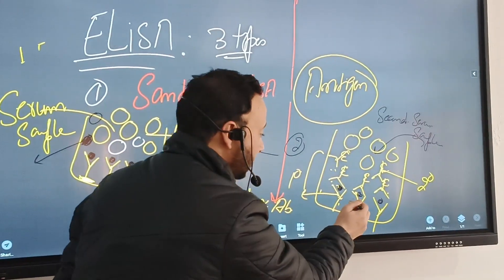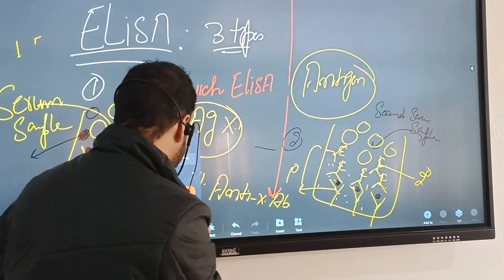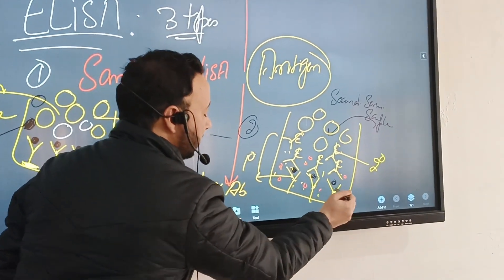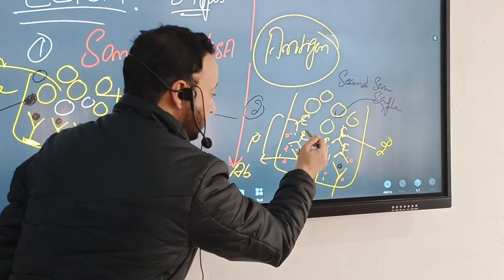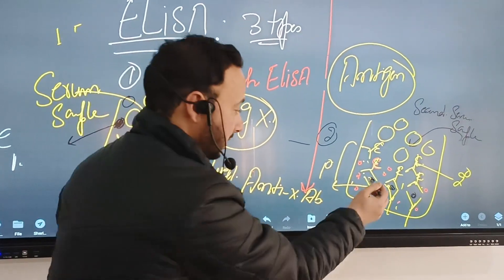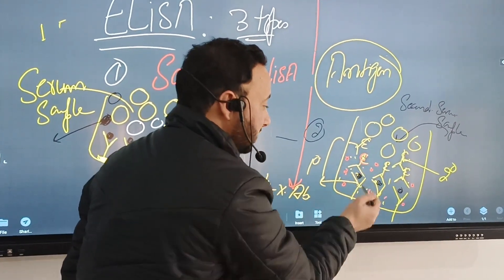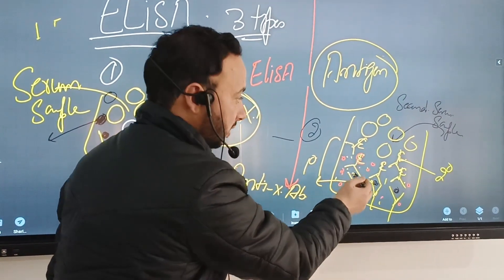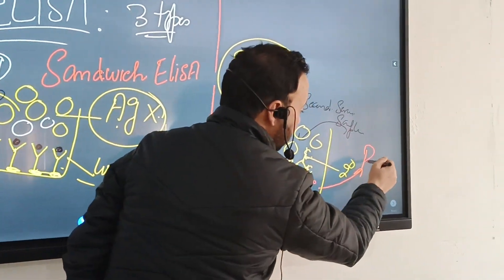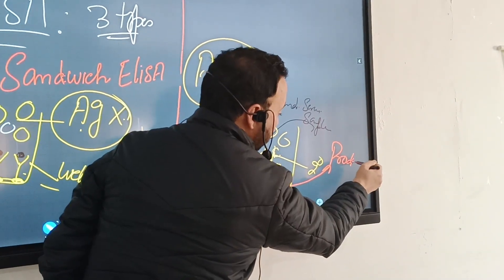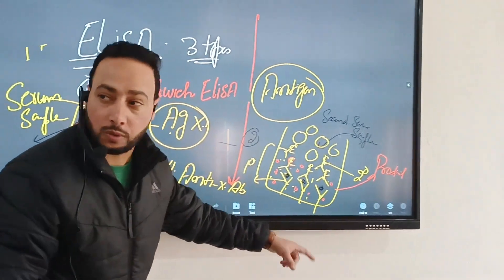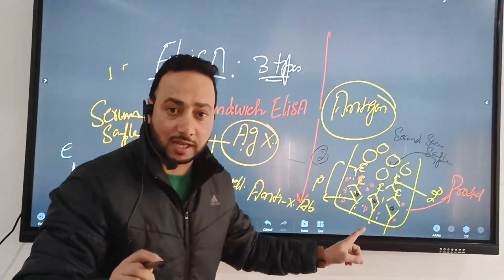In the third step, we add a colored substrate such as hydrogen peroxidase or aminase. The enzyme linked to the secondary antibody reacts and converts the substrate into a product. If there is production of color, the test is positive. If there is no production of color, the test is negative.